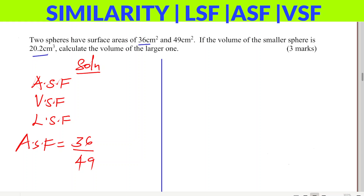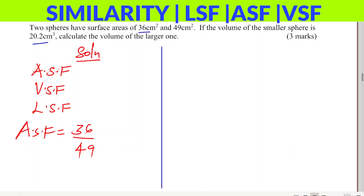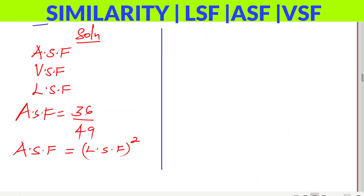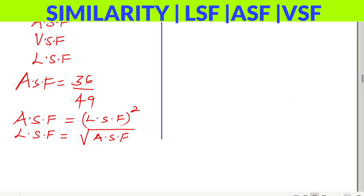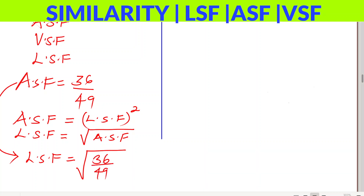You also need to understand the relationship between area scale factor and linear scale factor. Area scale factor is equal to linear scale factor squared. In simple terms, linear scale factor equals the square root of the area scale factor. So here, linear scale factor = √(36/49) = 6/7.